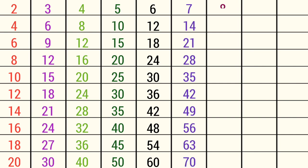8 ones are 8, 8 twos are 16, 8 threes are 24, 8 fours are 32, 8 fives are 40, 8 sixes are 48.